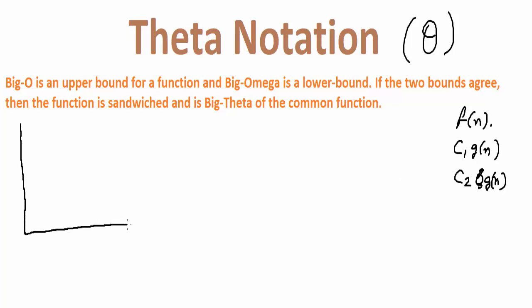Suppose we have a graph something like this, this is the n-axis. Suppose we have a function called c2 g(n), and suppose this is a function like c1 g(n), and our sandwiched function is something like this. This is our f(n).